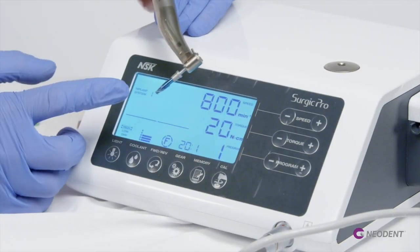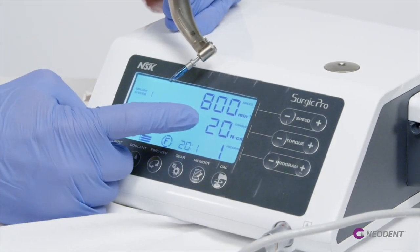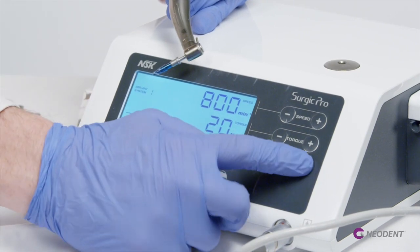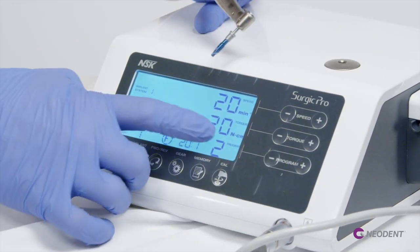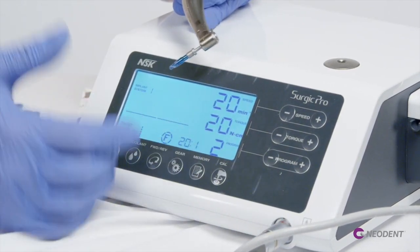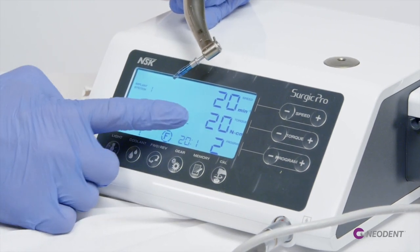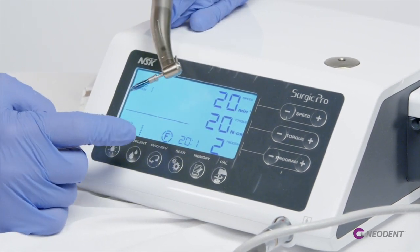Because now we're placing our implant, we want to change the program from 800 RPMs. We want to move this over to Newton centimeters and set this at 20 or 35, whatever your preference is, but this is always set around 30 RPMs to spin this implant.